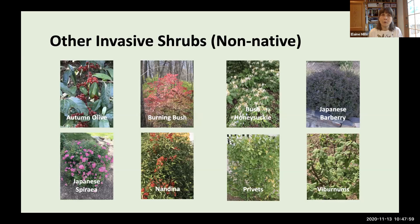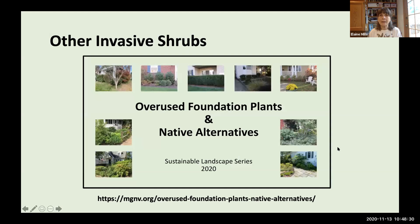There are unfortunately quite a few other invasive shrubs in our area, including autumn olive, burning bush which spreads tremendously through forest areas, bush honeysuckle, Japanese barberry which is a nursery for ticks, Japanese spirea, nandina which can be toxic to animals including cedar waxwings, privets, and all of the Asian viburnums. I've created fact sheets for each category, with detailed discussion of those and native alternatives in a presentation available as a recording on our MGNV website.